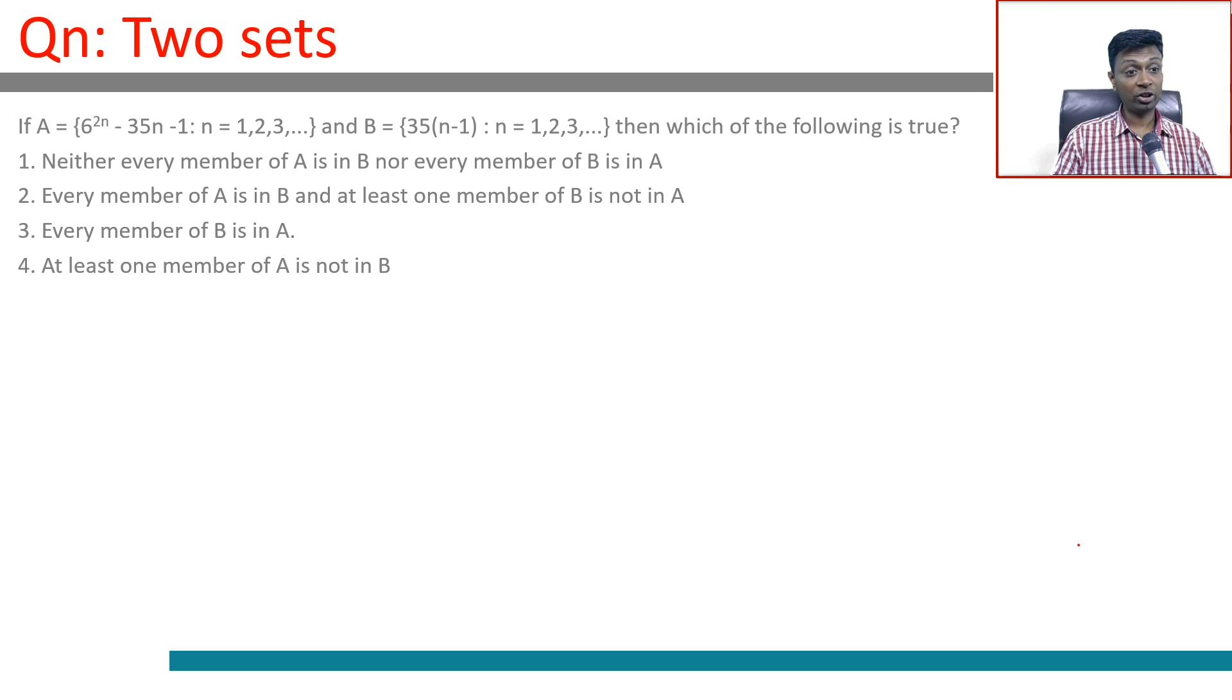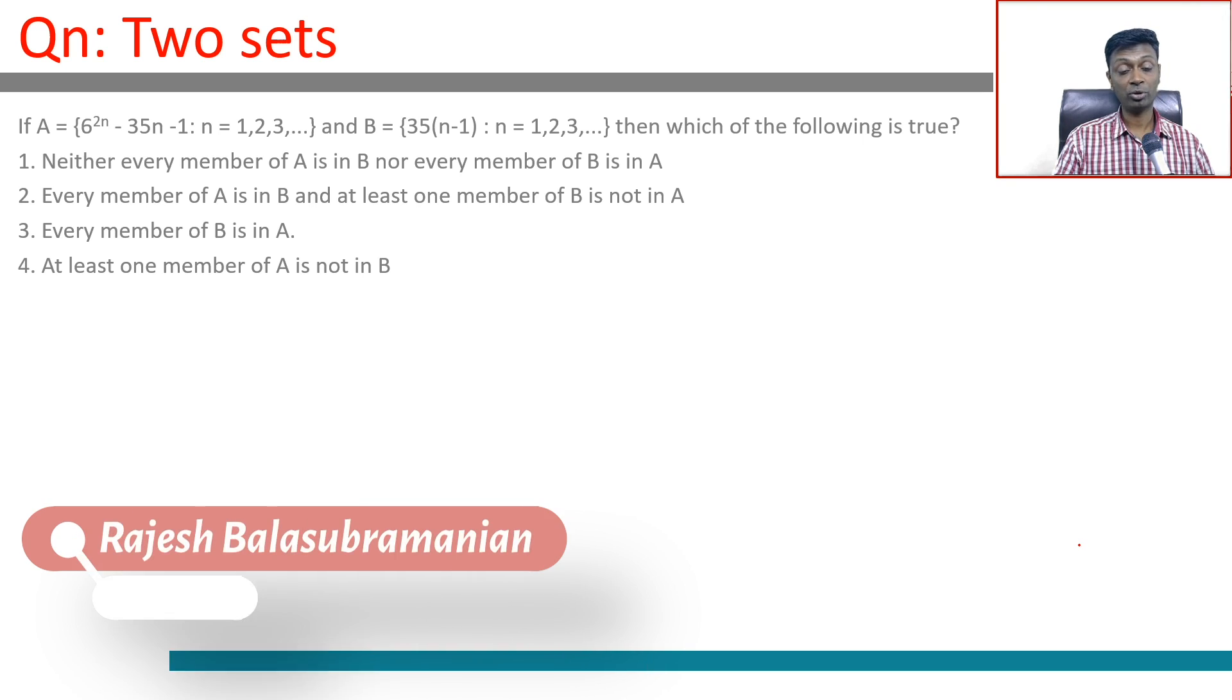A is 6^(2n) - 35n - 1, n = 1,2,3... and B is 35(n-1), n = 1,2,3... Which of the following is true? Neither every element of A is in B nor every member of B is in A.